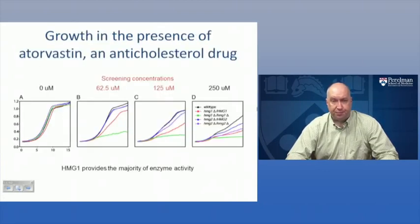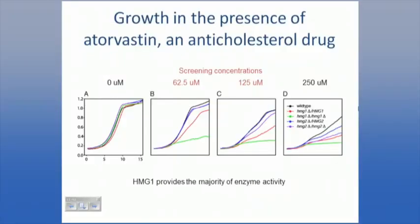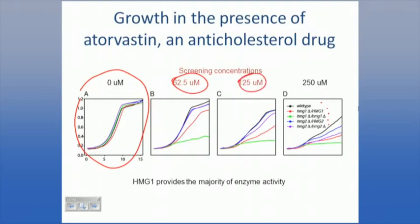Here's an example of growth in the presence of adervastin, an anti-cholesterol drug, from Giaver et al., PNAS 2004. At zero micromolar of adervastin, the wild-type strain and the HMG1 and HMG2 knockout strains are growing at practically the same rate. When the concentration is raised to 62.5 or 125 micromolar, you can see that HMG1, which is the principal HMG-CoA reductase in yeast, has the biggest effect - deletion of one or two copies produces a strong effect. And at 250 micromolar, all four strains are growing slower than in the absence of the drug.